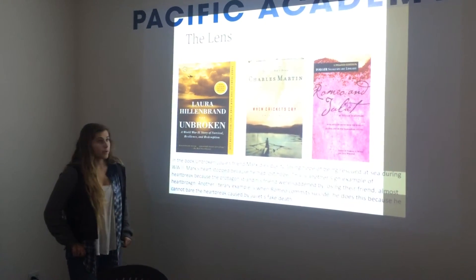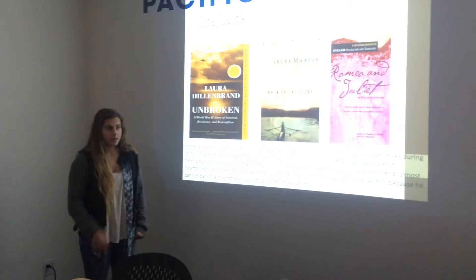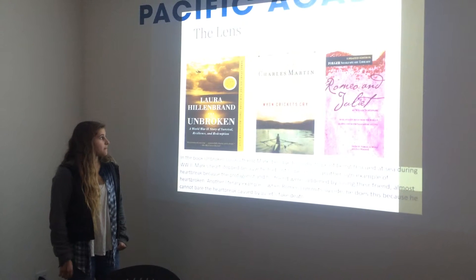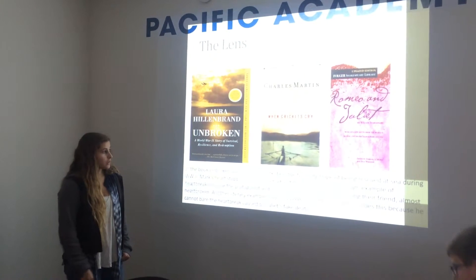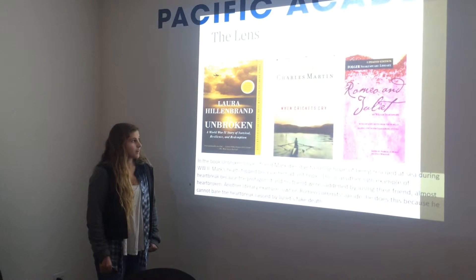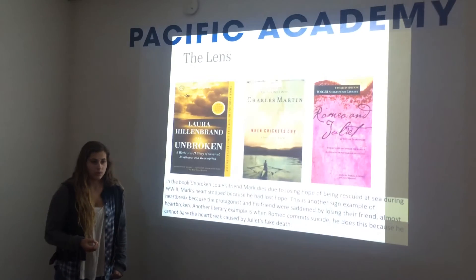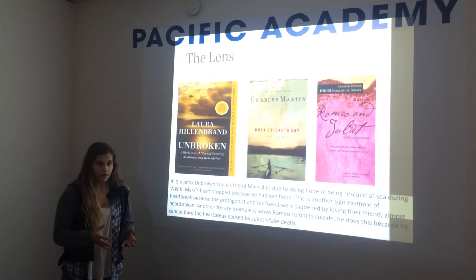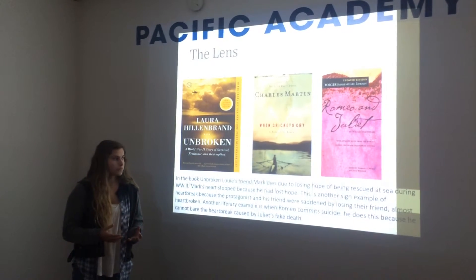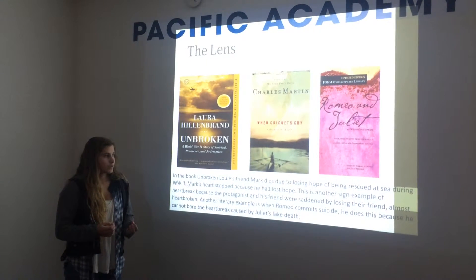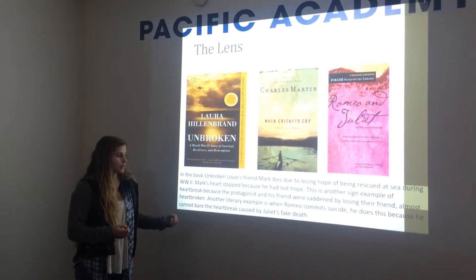For an example, in the book Unbroken, the protagonist Louis was in the Air Force during World War II, and he was shot down in the middle of the Pacific Ocean with his two surviving friends. While they were surviving, his friend Mark was slowly dying. Even though they had the proper supplies to survive, he just had a broken heart because he couldn't bear the fact of not coming home. And that's one part of the heartbreak lens.